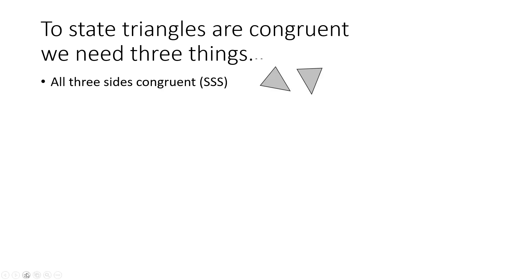One option is we could say we know all three sides are congruent — one side equal to another side and a third side equal to a third side. We use tick marks to say that corresponding sides are congruent: one tick is congruent to one tick, two ticks to two ticks, and three ticks to three ticks. If the sides are all congruent, the angles must automatically be congruent. We call this the side-side-side congruence shortcut.